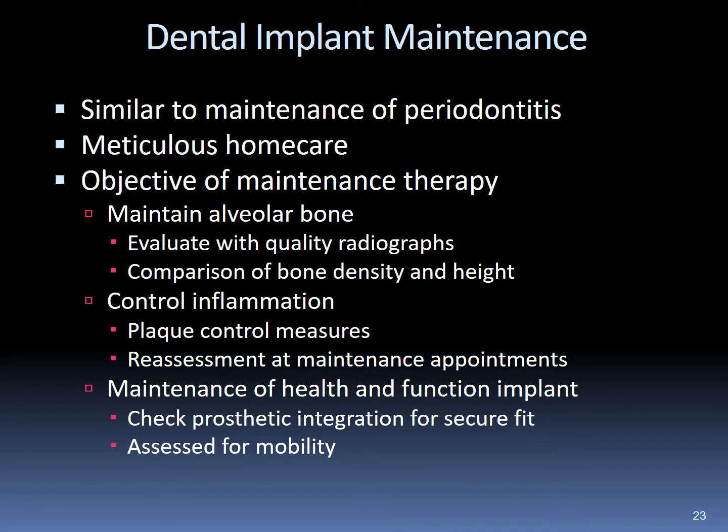The maintenance of implants is similar to the treatment of periodontitis. Meticulous home care is a must, and the objective of maintenance therapy is to maintain the alveolar bone, control inflammation, and ensure the health and function of the implant. During appointments, radiographs assist in comparing bone density and bone height. Plaque control measures should be reassessed and changes made if necessary. The prosthesis should be checked for fit and assessed for mobility.